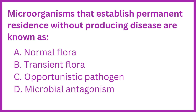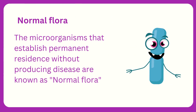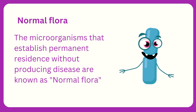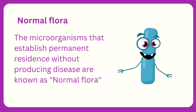Microorganisms that establish permanent residence without producing disease are known as: Option A, normal flora; B, transient flora; C, opportunistic pathogen; D, microbial antagonism. The microorganisms that establish permanent residence without producing disease are known as normal flora.